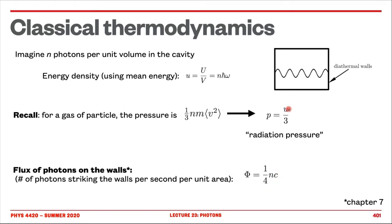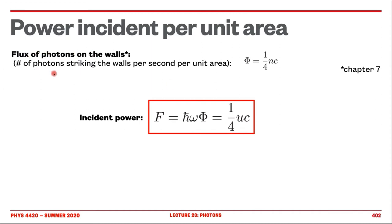So most everything depends on u, which just depends on the average frequency, and this flux depends simply on the density of photons. We know that the flux of photons is one quarter n c. We can therefore get straightforwardly the incident power. When we talk about power, we are talking about energy per second — in this case, energy per second per unit area. This is proportional to the flux of photons. We know the energy of each photon on average is h-bar omega. Therefore, the incident power per unit area is going to be one quarter u times c.